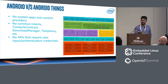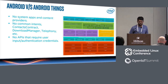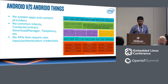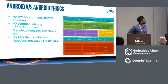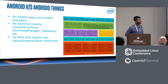Google is tackling the IoT market with Android Things, leveraging as much work as they've done on Android as possible. Although it is Android-like, there are differences — certain things that are not available, like system apps and content providers. Framework APIs are a subset of what Android offers, like activity and maybe location, but not all. Common intents, context, and telephony are not available. The download manager is not available, so you can't install APKs using Google Play. Also, there are no APIs for input and authentication — keep in mind that Android Things is also meant for devices without displays, so there's no user input, for now at least.